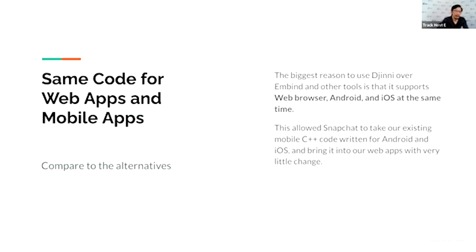The biggest reason to use Genie over other binding tools is that it supports web apps, Android, and iOS all at the same time. This allows Snapchat to take our existing mobile C++ code written for Android and iOS and bring it to our web apps with very little change. It's almost exactly the same code.